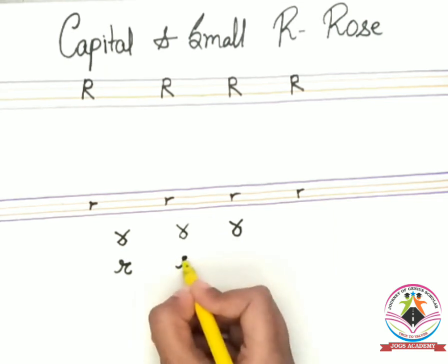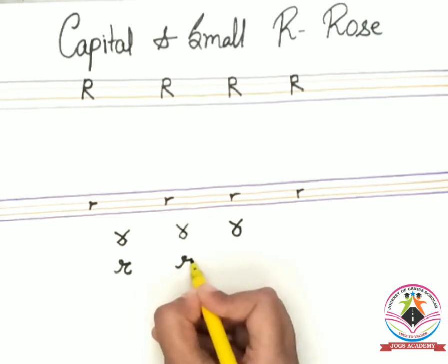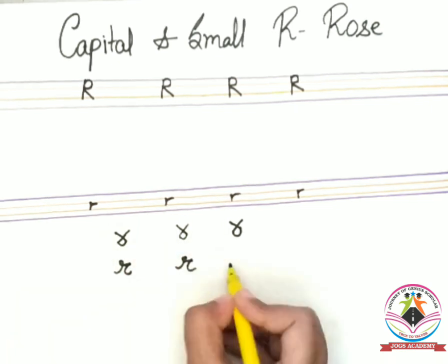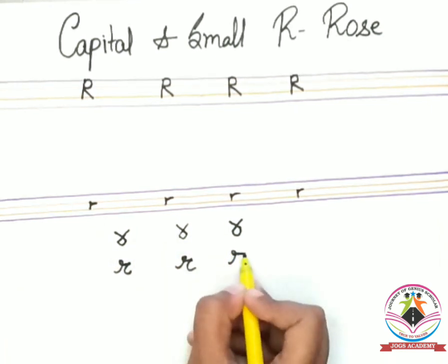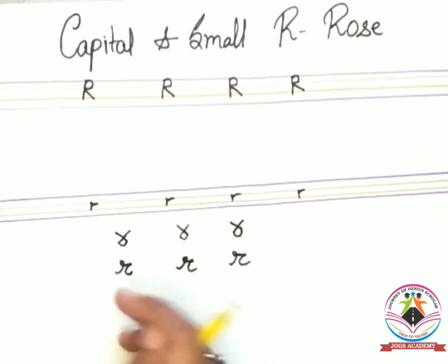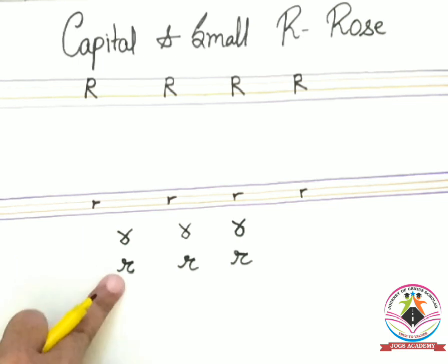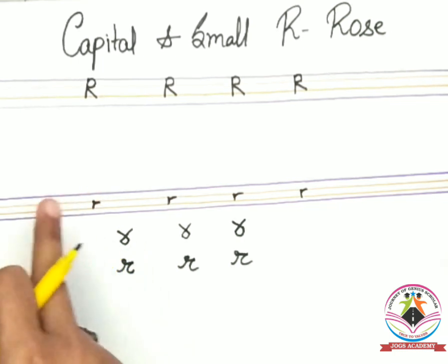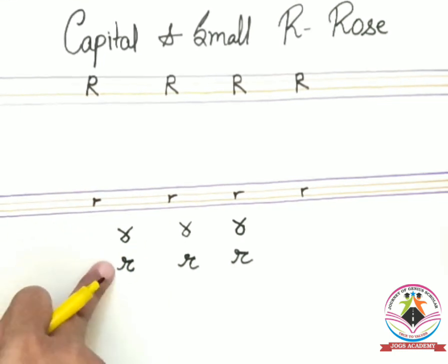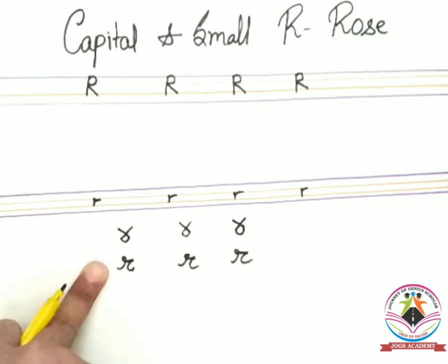Slanting line circle sleeping line and curve circle sleeping line and make a curve like this. This is a smaller and this is smaller and this is also smaller. So whichever is comfortable for you, practice that in your copy. Practice it, thank you.